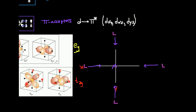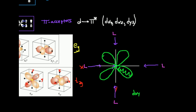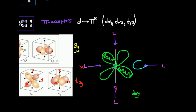Suppose I have a metal d orbital that looks like this — the dxy orbital, since it's in the xy plane. My question is: can the dxy orbital sigma bond? A sigma bond requires head-to-head overlap, meaning the ligand must approach along one of the axes. The answer is no — this orbital does not line up head-to-head with any of its four lobes along the axes, so that sigma bond does not form.